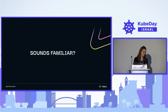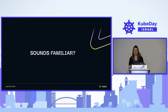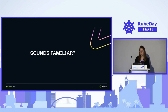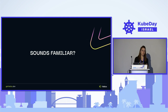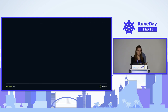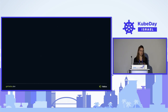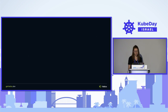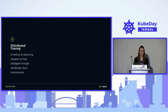I assume this sounds familiar to some of you — whether you've tried to install some observability solution, maybe even OpenTelemetry, and it wasn't the smooth ride you expected. So let's try to understand what happened in Maya's system. First, let's go over some basic concepts in distributed tracing in case some of you don't know them.